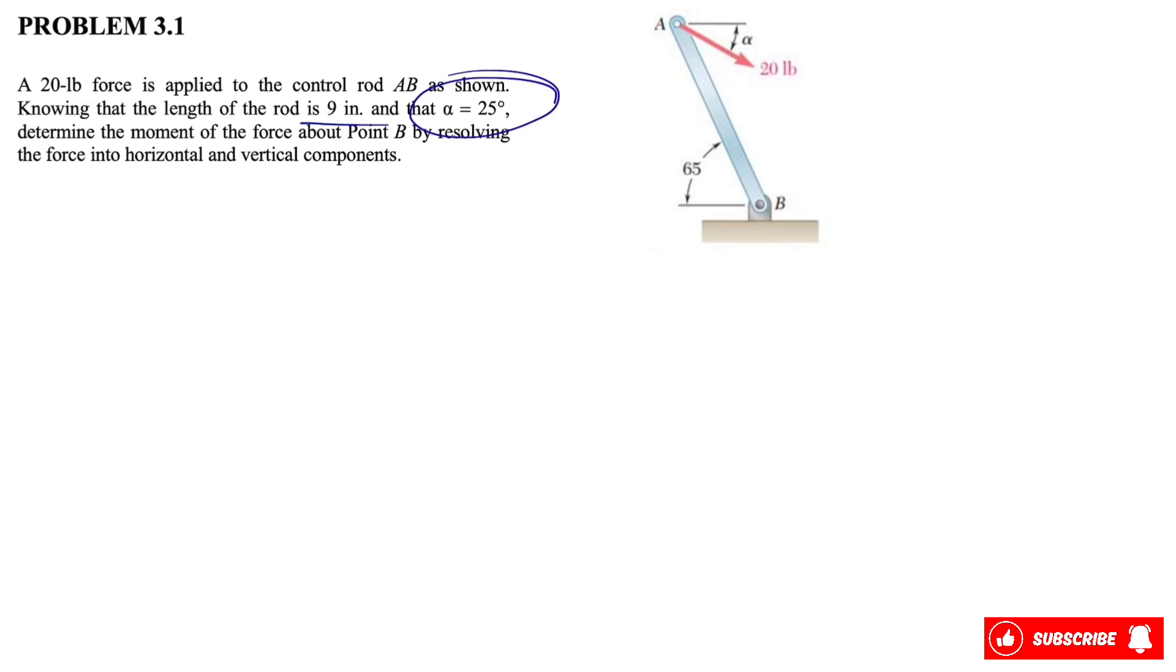So we have the rod AB, we want to show it like that in here, that is pinned at point B. We have a force of 20 pounds in here which we know is making 25 degrees here, and this angle will be 65 degrees.